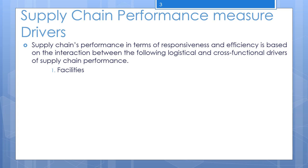If you think of inventory as what is being passed along the supply chain and transportation as how it is passed along, then facilities are the 'where' of the supply chain. They are the locations to or from which inventory is transported. Within a facility, inventory is either transformed into another stage — that is, manufacturing — or it is stored, as in warehousing.